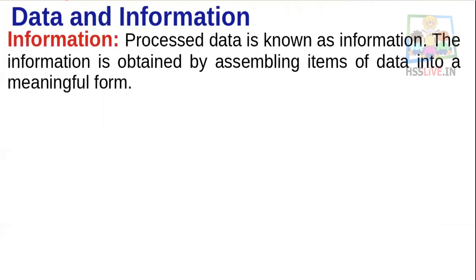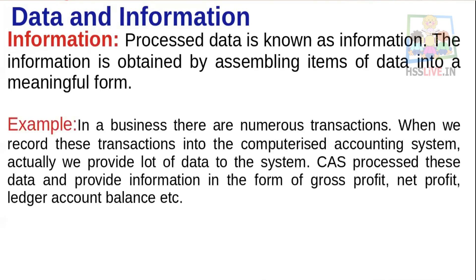Information: Process the data and the result is known as information. Information provides various insights and helps in decision-making and gaining knowledge. The information is obtained by assembling items of data in a meaningful form — for example, finding out gross profit, net profit, ledger account balances, preparing trial balance, trading profit and loss account, and balance sheet. That meaningful arranged output is information.